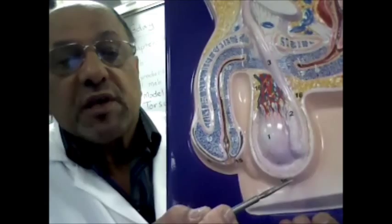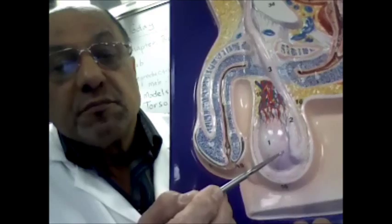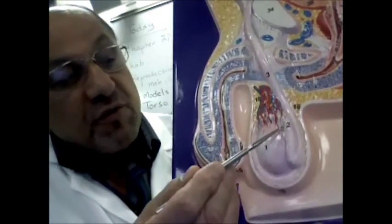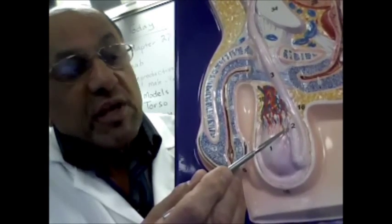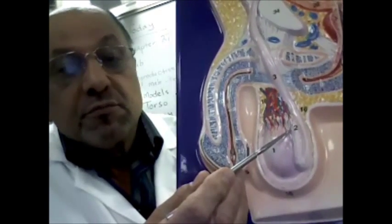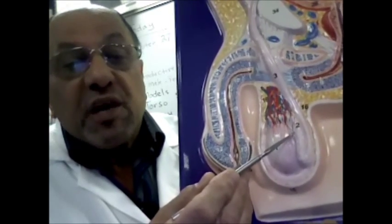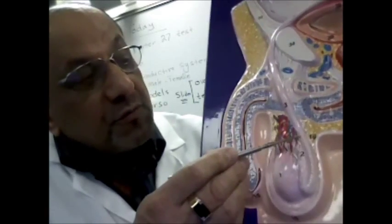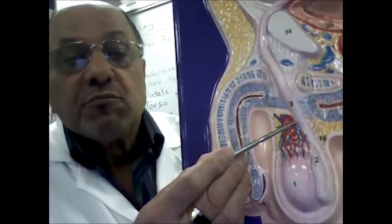The sperms will travel from the testes into this structure on top of the testes which is the epididymis. They normally stay in the epididymis for a while and go through a process of maturation. Then they will travel through the tubular structure shown here and that is the ductus deferens, also known as the vas deferens.